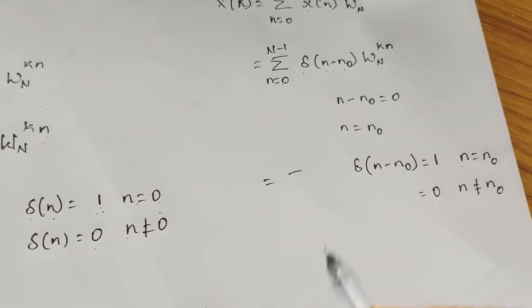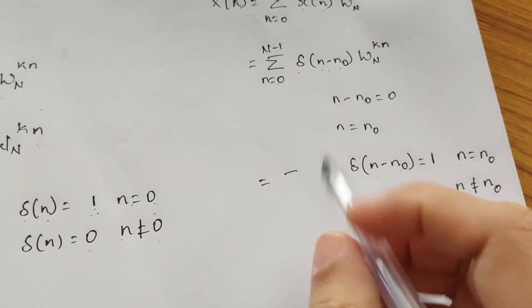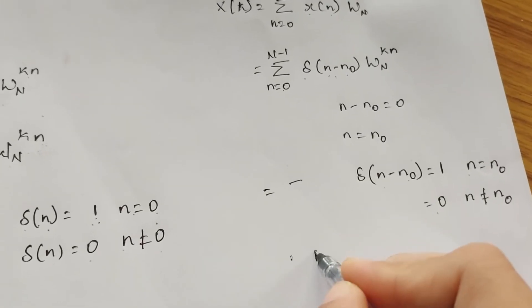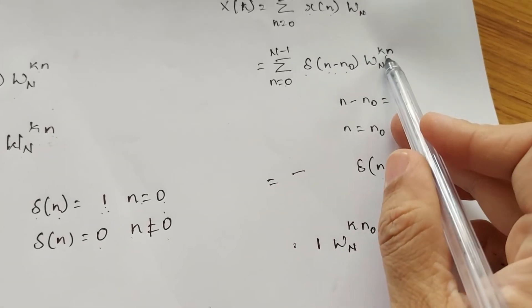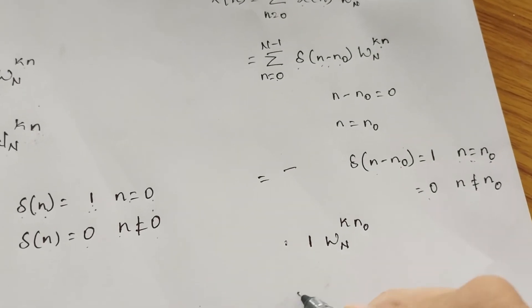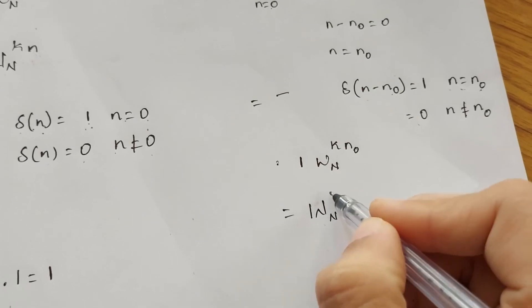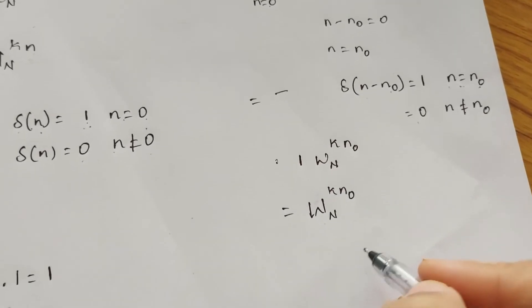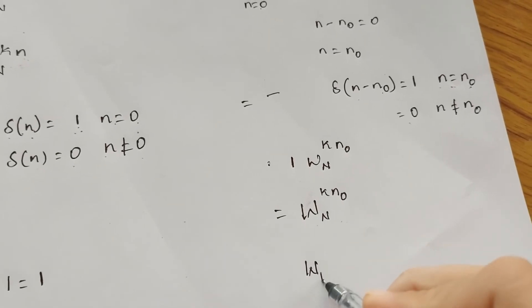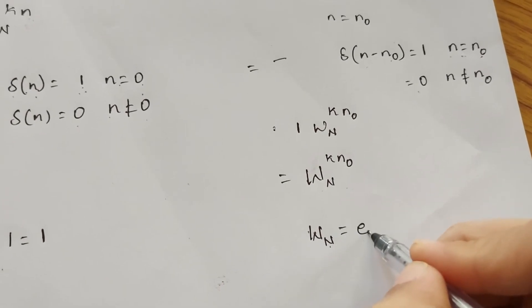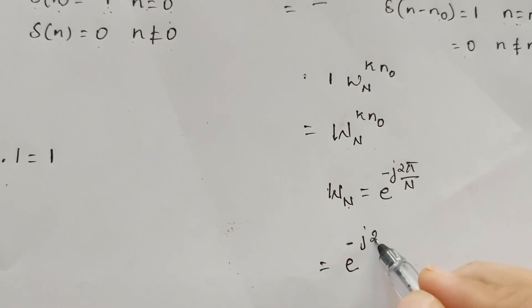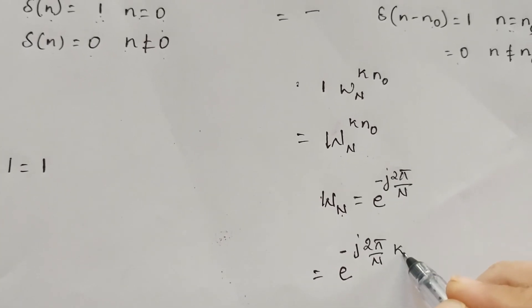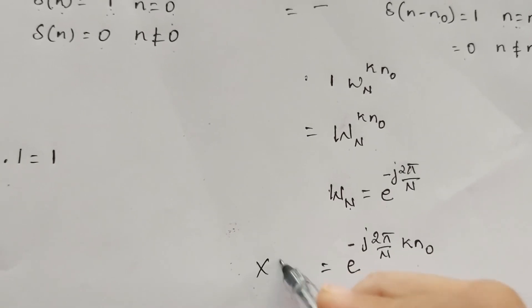When we expand the summation, only the term where n = n₀ survives, all others are zero. So δ(n - n₀) picks out the value 1 · W_N^(k·n₀). Therefore X(k) = W_N^(k·n₀), where W_N = e^(-j2π/N), giving X(k) = e^(-j2π/N · k · n₀).